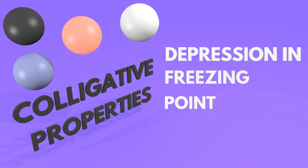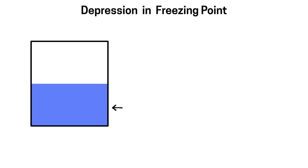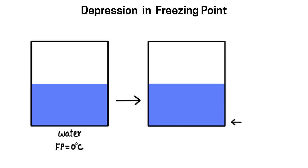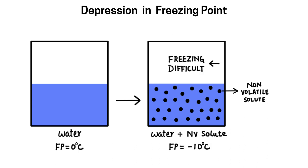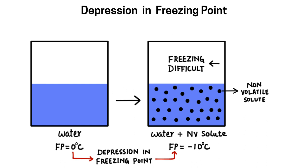Now we understand what depression in freezing point means. This is my pure liquid — say water — whose freezing point is 0 degrees Celsius. In the second case, we have liquid with a non-volatile solute added. Because of the non-volatile solute, it becomes difficult to freeze. So now the water might freeze at minus 10 degrees Celsius instead of 0. Freezing point घट गया — जिसके कारण इस वाले को freeze करना मुश्किल है और pure liquid को freeze करना आसान है। We are witnessing depression in freezing point.